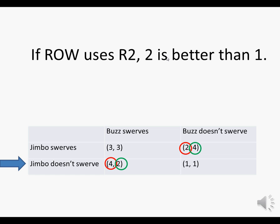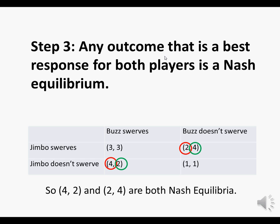2 is the better payoff. The final step is: any outcome that's a best response for both players is a Nash equilibrium. We see that among the four ordered pairs, there were two that turned out to have responses circled for both players. So both (4, 2) and (2, 4) are Nash equilibria.